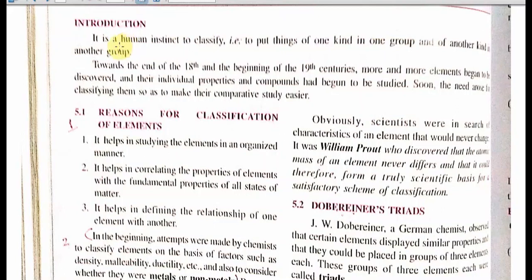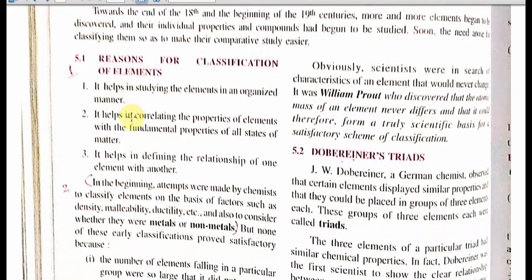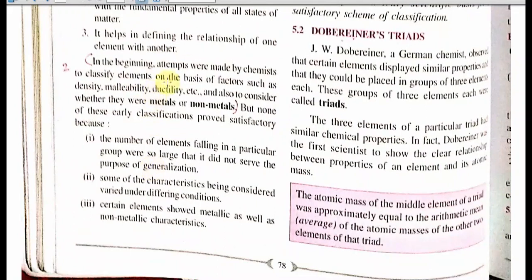What were the reasons for classification of elements? First, it helps in studying elements in an organized manner. Second, it helps in correlating the properties of elements. Third, it defines the relationship of one element with another. In the beginning, scientists attempted to segregate elements on the basis of malleability, density, ductility, and other physical factors — whether they are metal or non-metal. However, these early classifications were not sufficient because the number of elements falling in a particular group was so large that it was not beneficial.